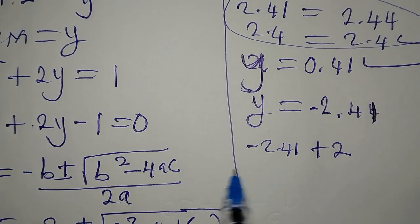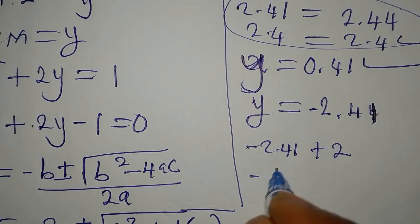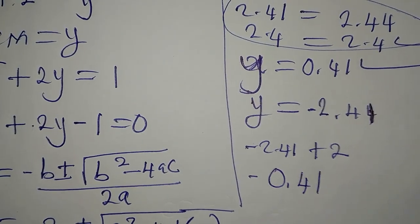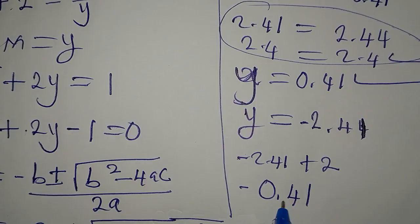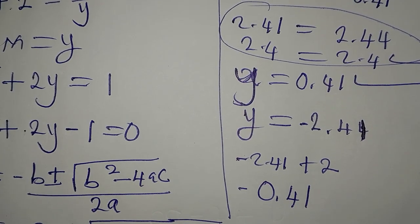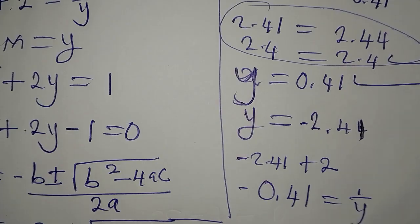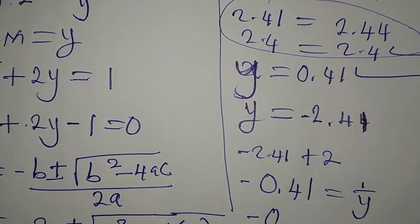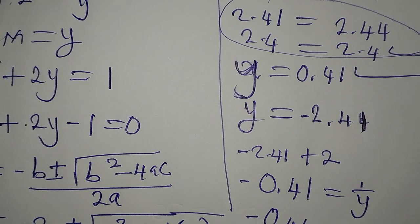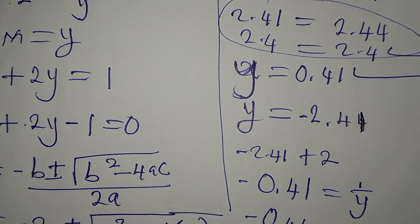What we have here is going to give us negative 0.41. So what we have here is for the left hand side. Remember, the right hand side is equal to 1 over y. So let's have this, our negative 0.41, then this place becomes 1 over negative 2.41.